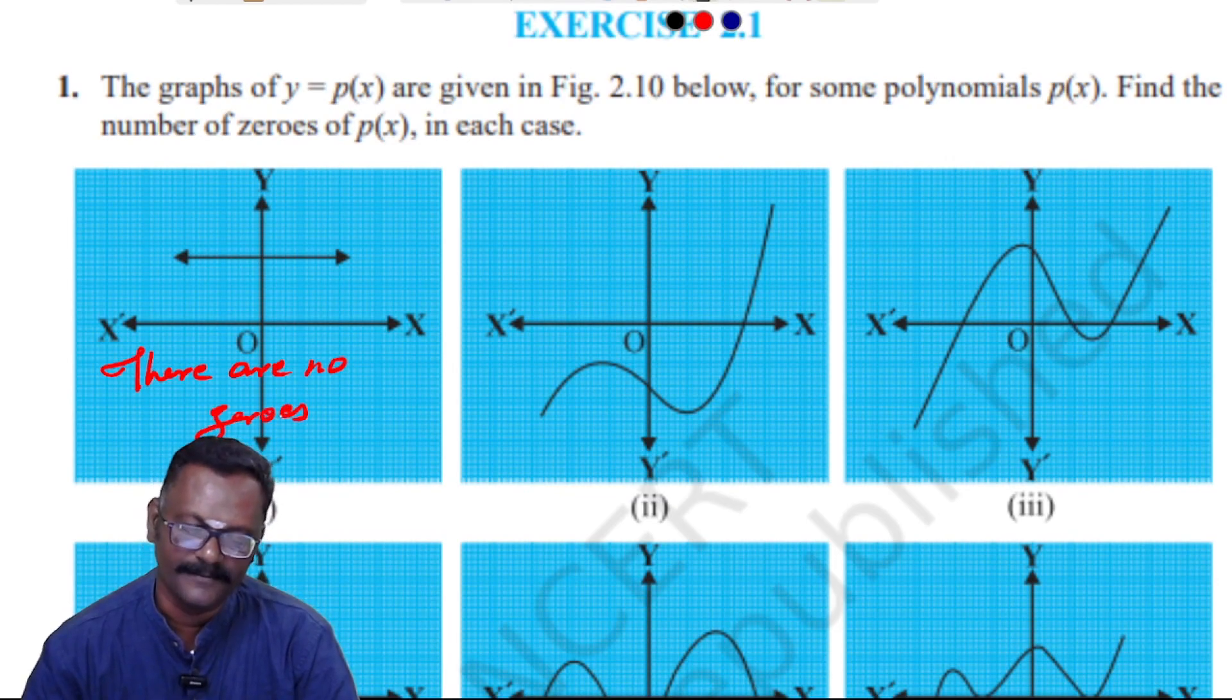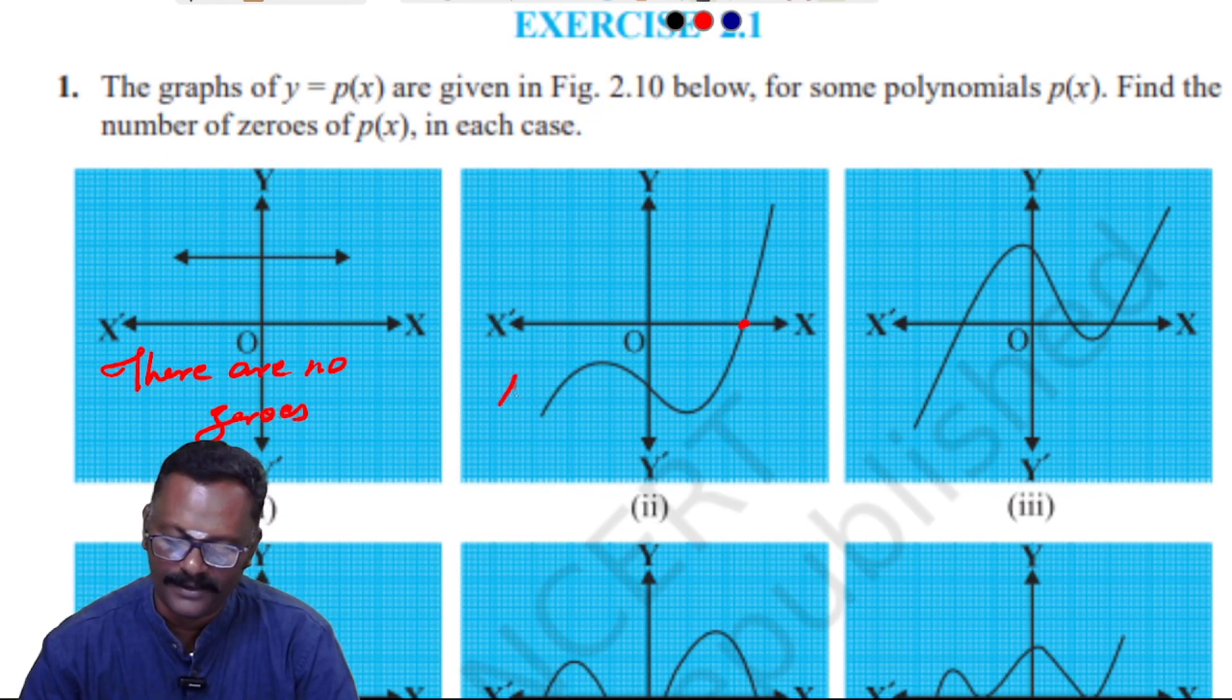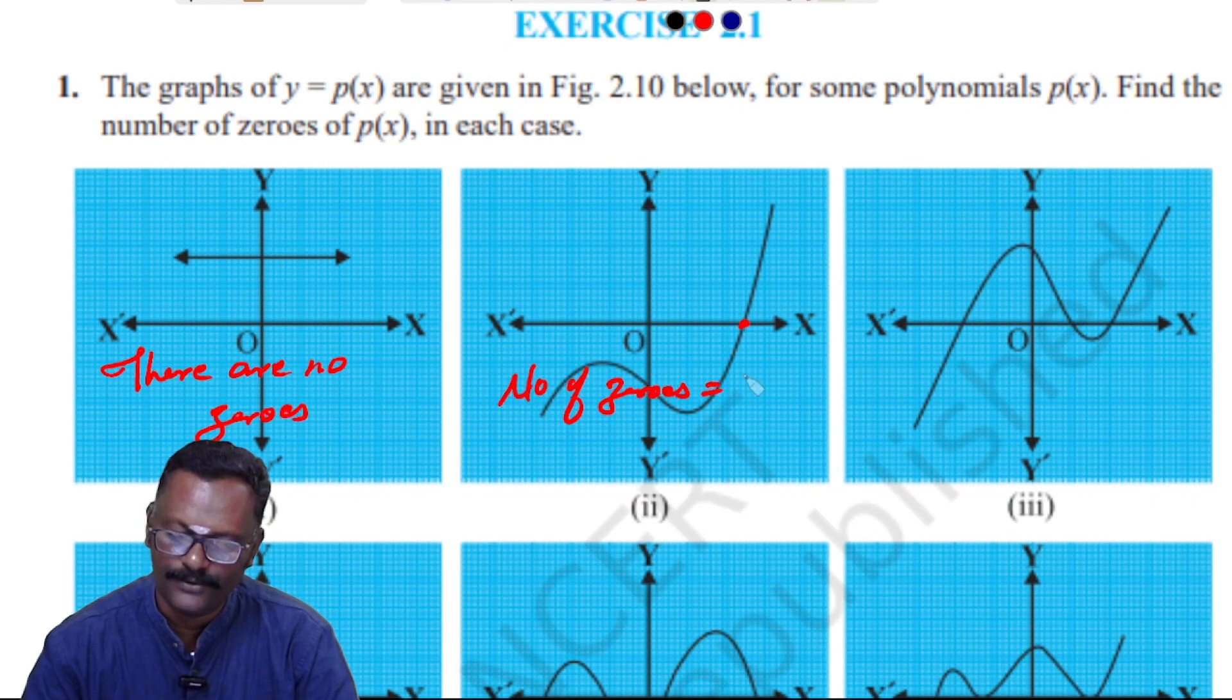Next, looking at the second graph. The graph intersects at one point, so number of zeros equal to one, as the graph intersects the x-axis at one point.